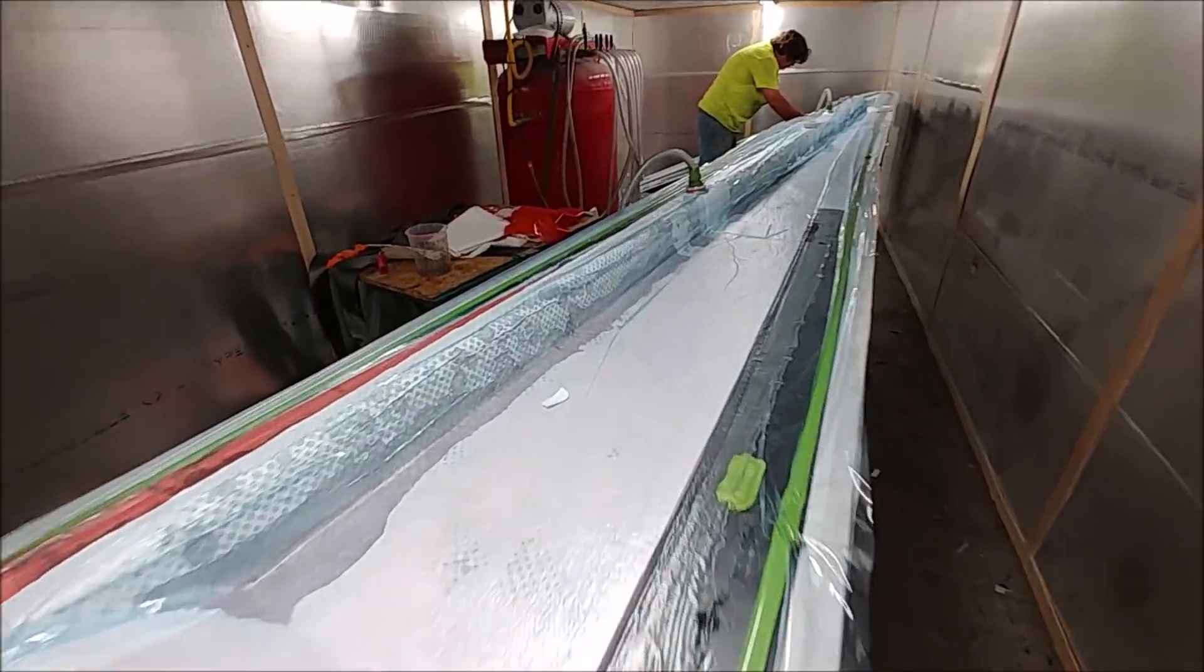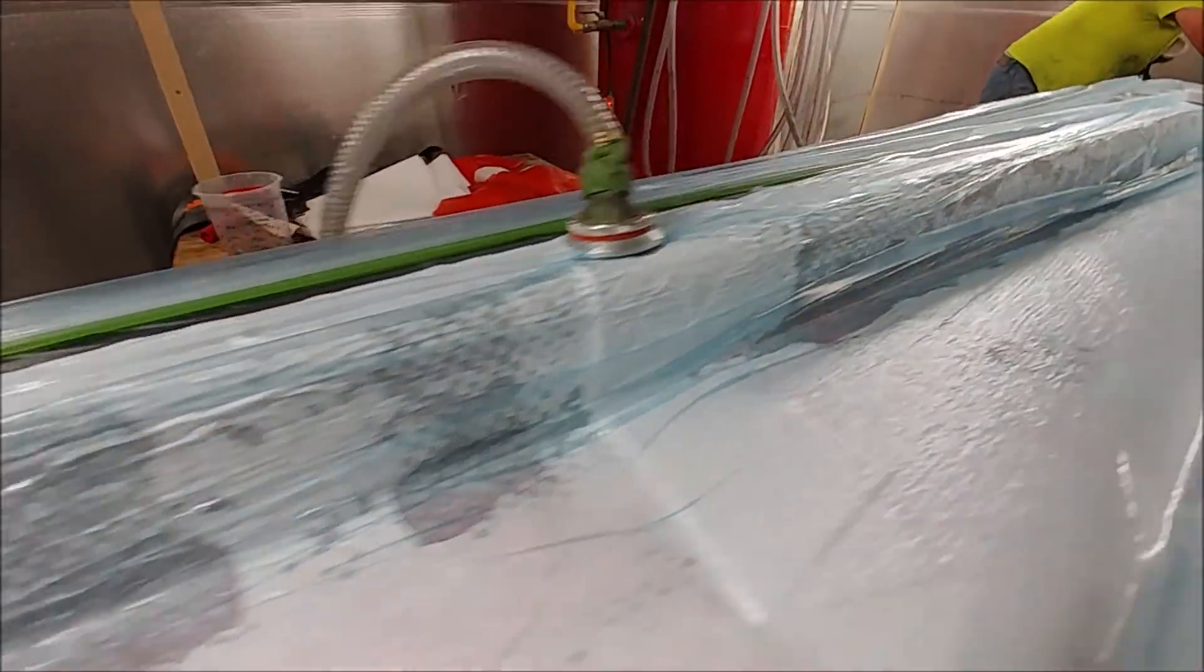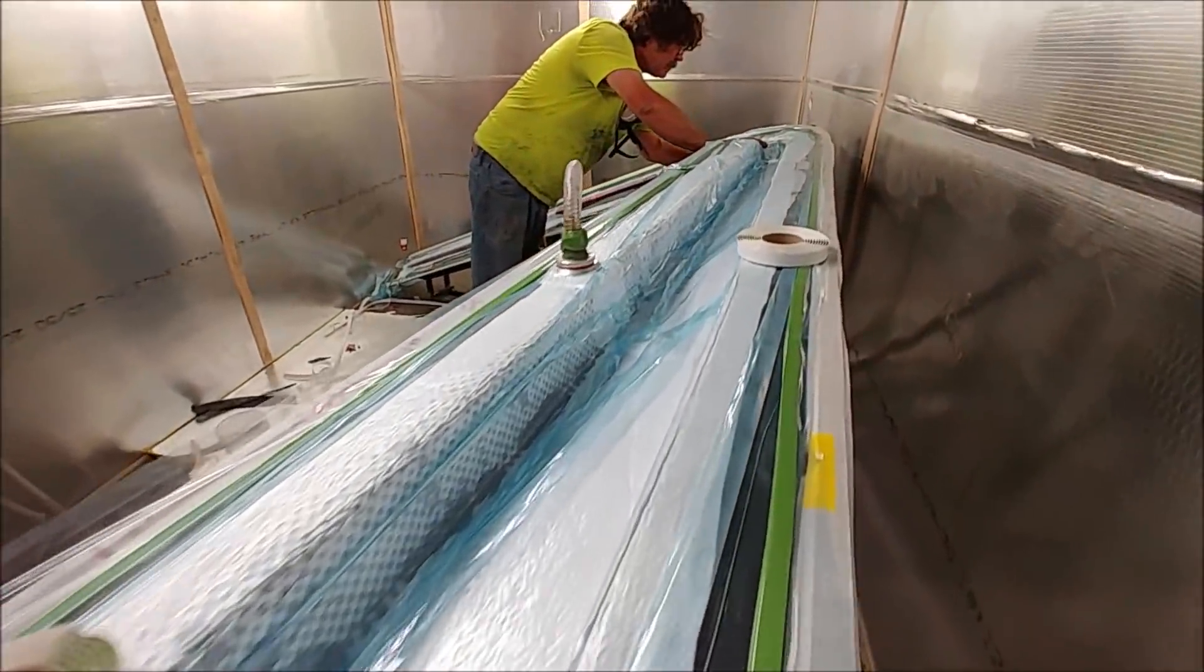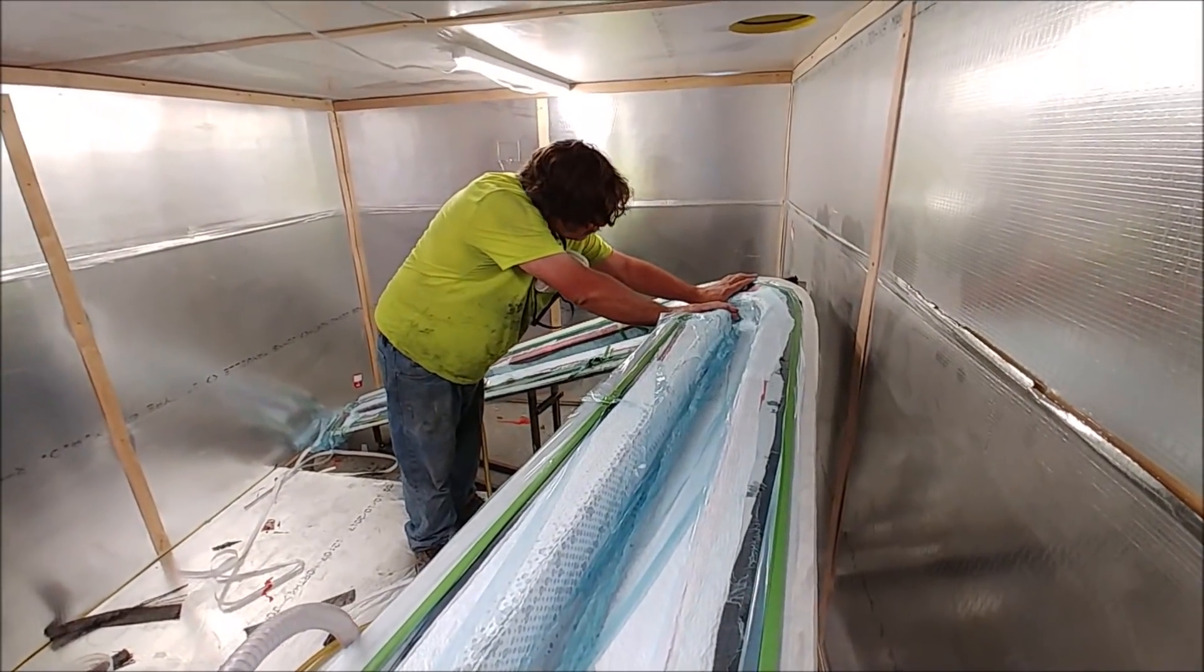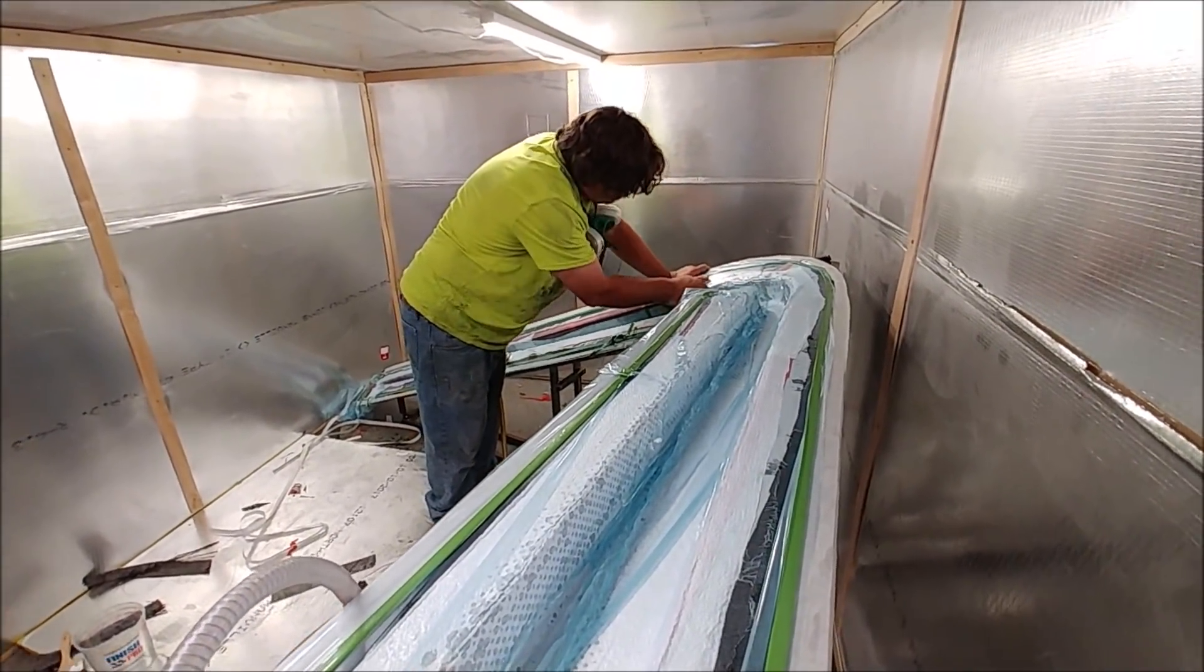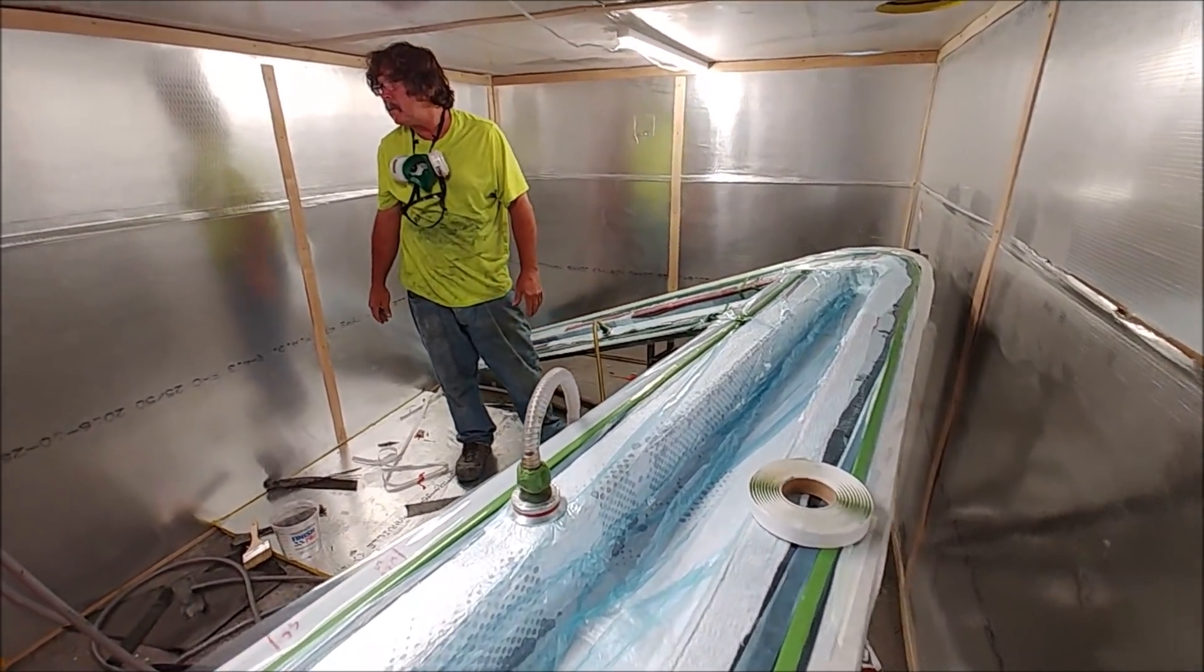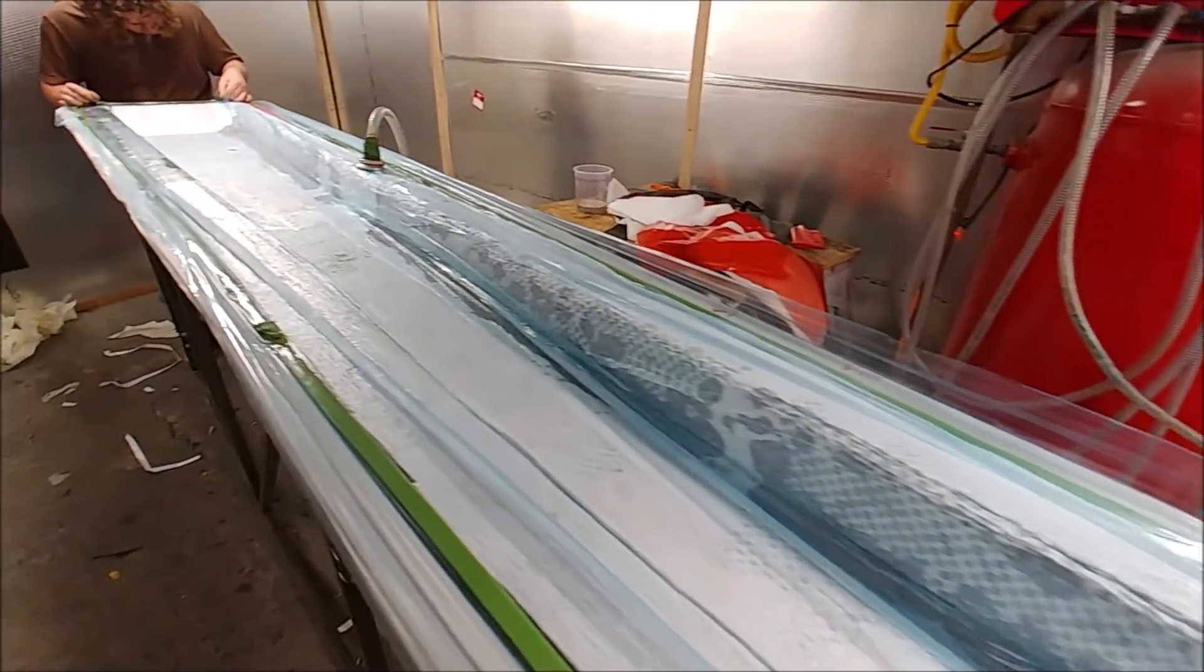This is a little bit later on, so the layup has been done there and all the different plies are in for the upper spar cap. It's been peel plied and breather fabric and bagged, so Jeff's just checking there making sure there's no leaks in the bag. That leaves one more stage remaining for this particular part.